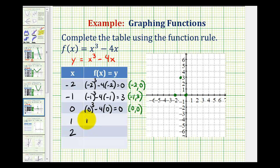Next we have x = 1, so we'd have a y value of 1³ - 4(1). It's going to be 1 - 4, or -3. This gives us the point (1, -3), which is this point here.